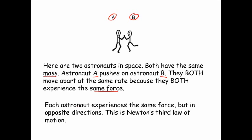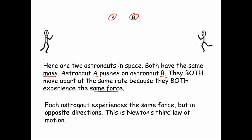They both accelerate up to their maximum velocity. As long as they're in contact with each other, they will accelerate away from each other. Once they let go, they move apart at exactly the same velocity — because they have the same mass — but in opposite directions. Each astronaut experiences the same force but in opposite directions. This is Newton's third law of motion in action.